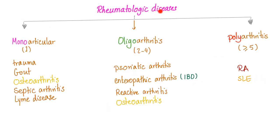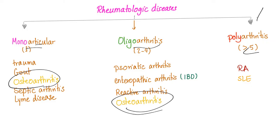Rheumatological diseases are either monoarticular, oligoarticular, or polyarticular. Monoarticular means one joint, oligo is 2–4, and poly is more than 5. How about osteoarthritis — where does it fit? Osteoarthritis can be mono, and it can be oligoarthritis. There is a very rare variant of osteoarthritis that's poly, but this is the exception rather than the rule.